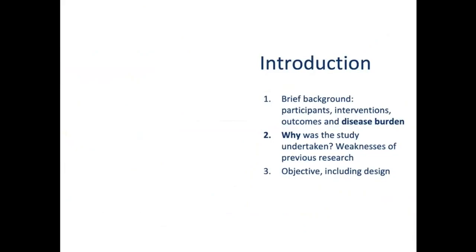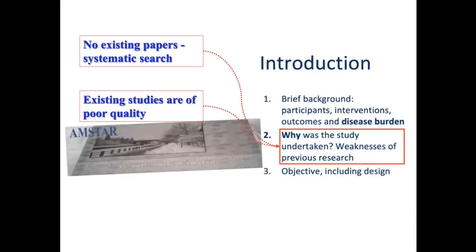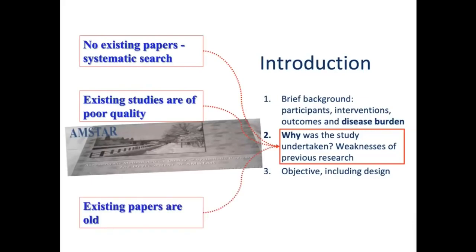You need to say why you did the study. There are only three reasons: either there is no such study before, the existing studies are of poor quality, or the existing papers are too old. In order to justify your study according to one or more of these criteria, you need to be sure from having performed a systematic search that what you say is verifiable — not just your own opinion, but independently checkable if somebody searched PubMed, for example.